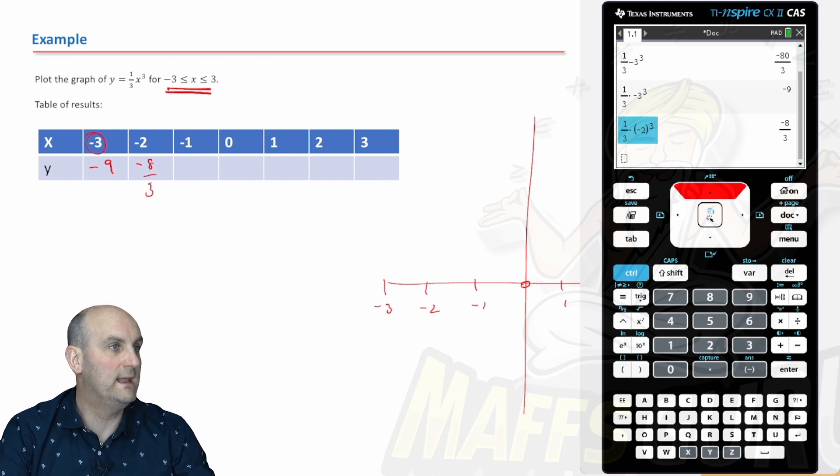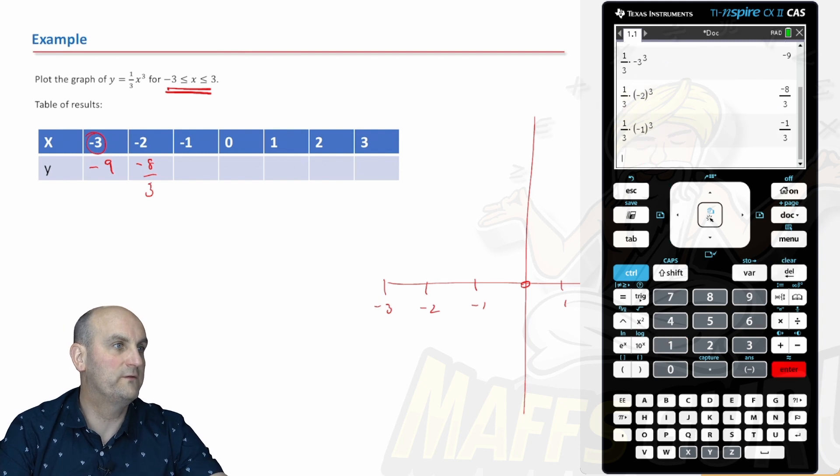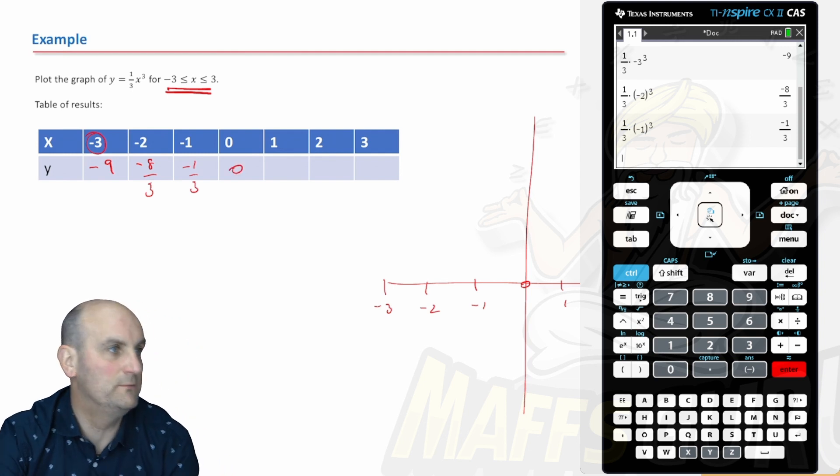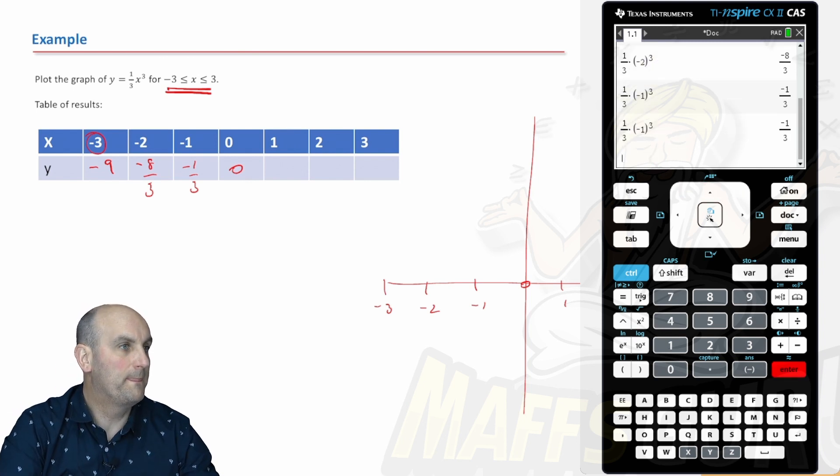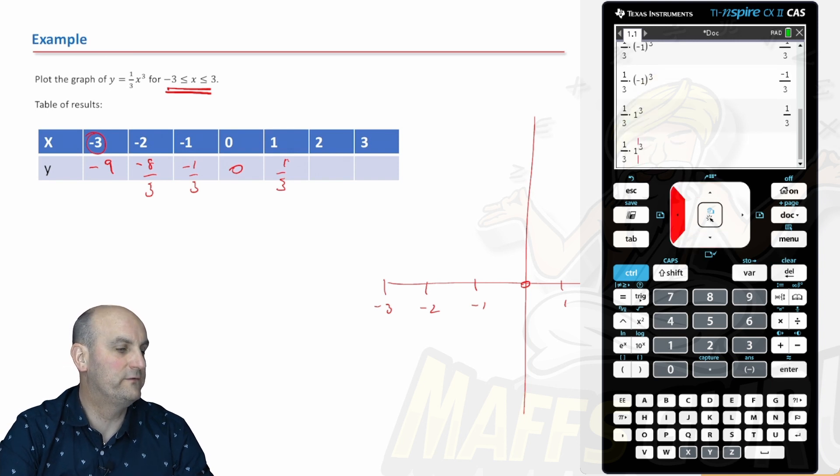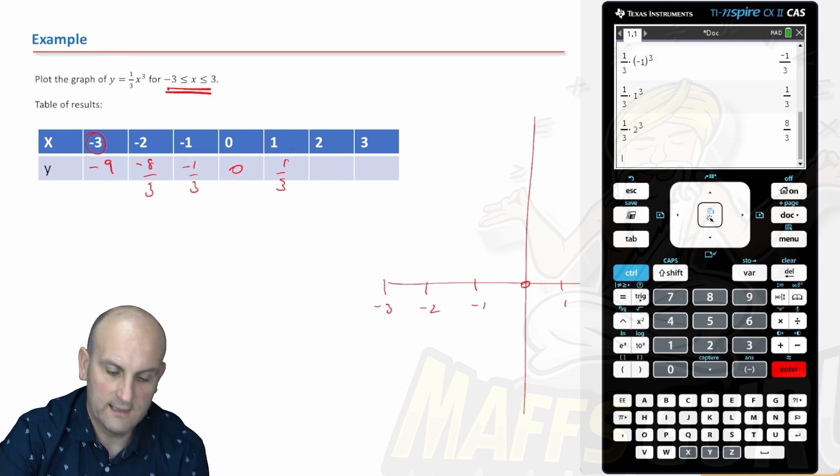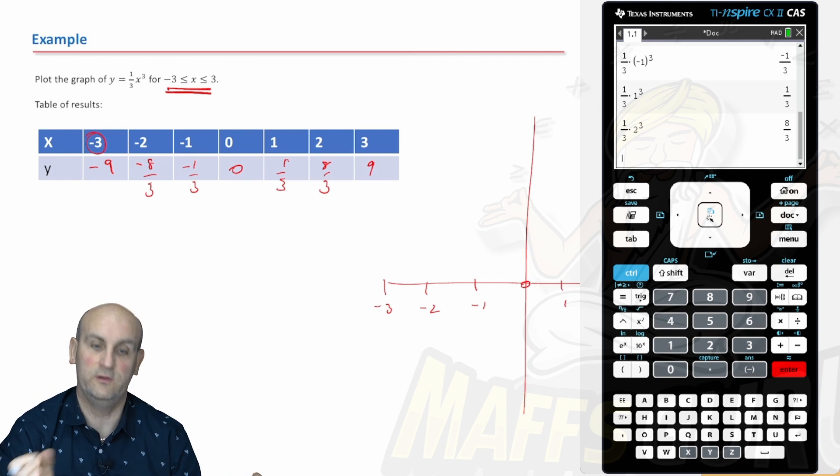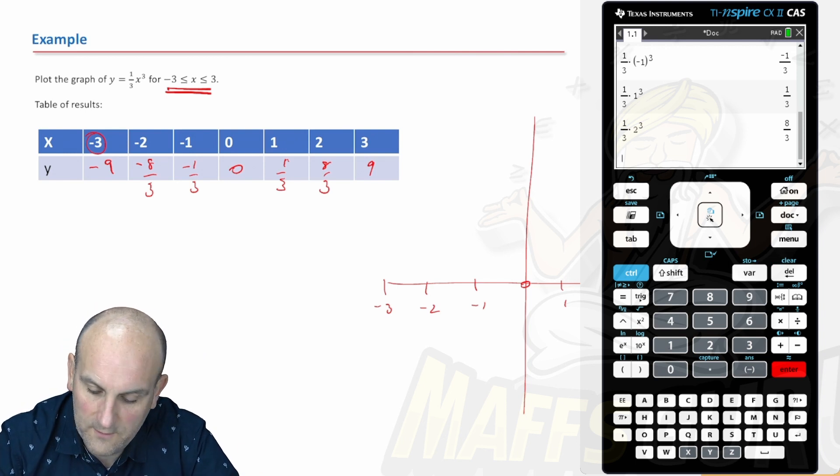What am I going to do now? I'm going to go back up, copy that down, change the value to negative 2 and go minus 8 on 3. Don't worry about the fractions, we're going to use those. We put minus 1 in now. Change that to minus 1. What have I got now? Minus 1 third. Put 0 in, I'm going to get 0 because 0 to the power of 3 is 0. Put 1 in, I get 1 third. Put the value of 2 in, I get 8 on 3. Put 3 in, I promise you I'm going to get 9. So that's nice, a bit of symmetry for the answers.